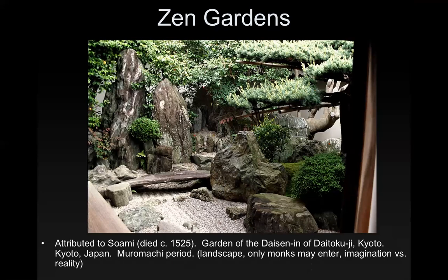Zen gardens. The designer of this one, Soami, who died in 1525, was the original designer, but over time it changes because these are living things — even the stones may change in form. Zen gardens are in cloisters in monasteries, so only monks can enter these areas. That's why it's kind of difficult to find pictures. Tourists can see it, but they have to view it from an inner courtyard railing on a different level than the garden itself.